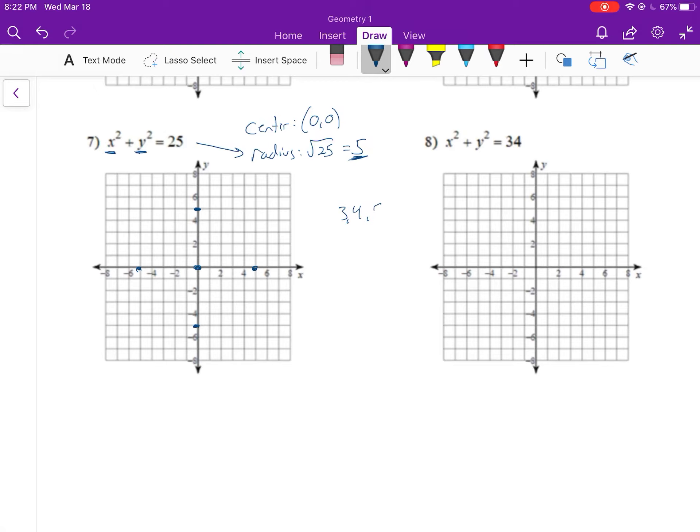Which means we could go over three, up four. That'll give us another point on our circle. Or we could go over four, up three. We can do that in any direction. It just gives us a couple more points on our circle to make sure we don't get a squircle.